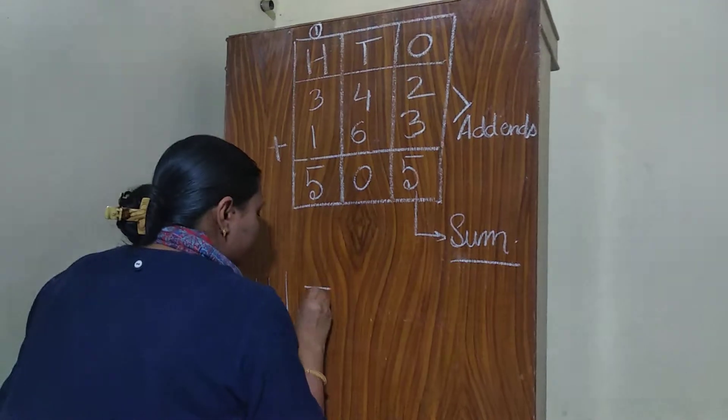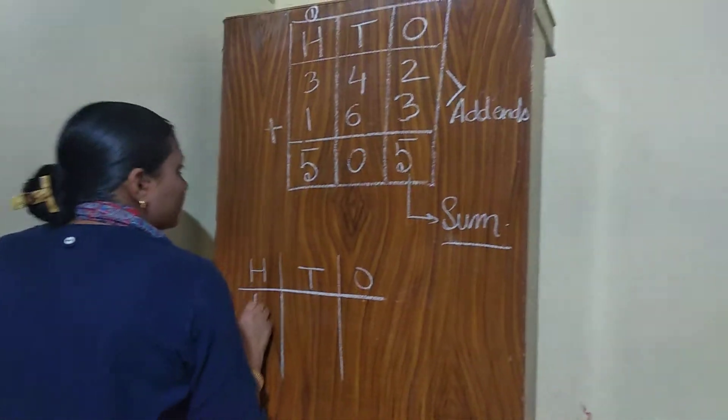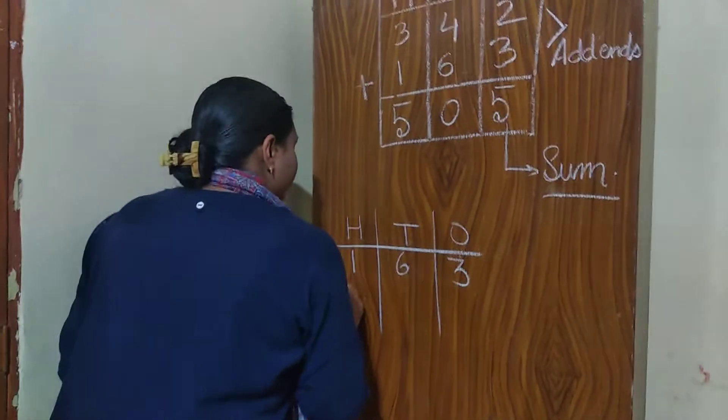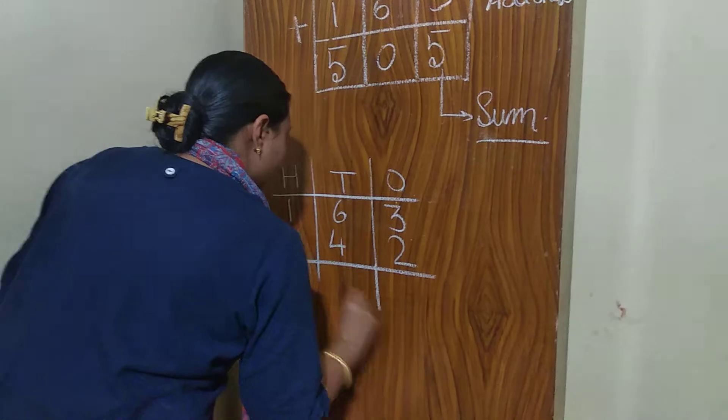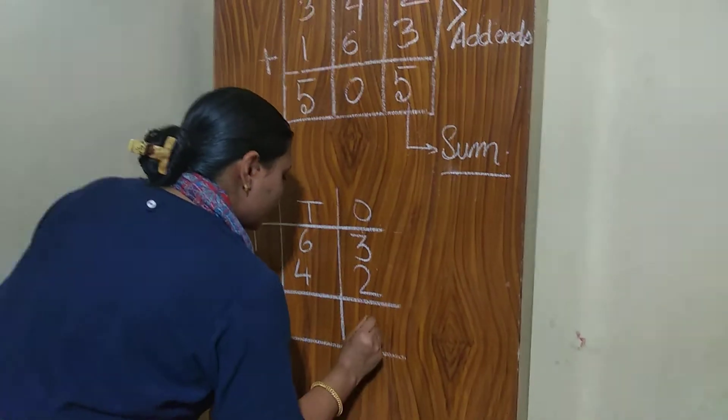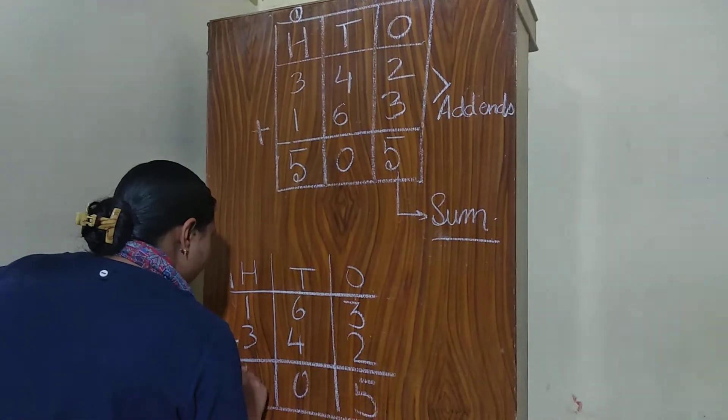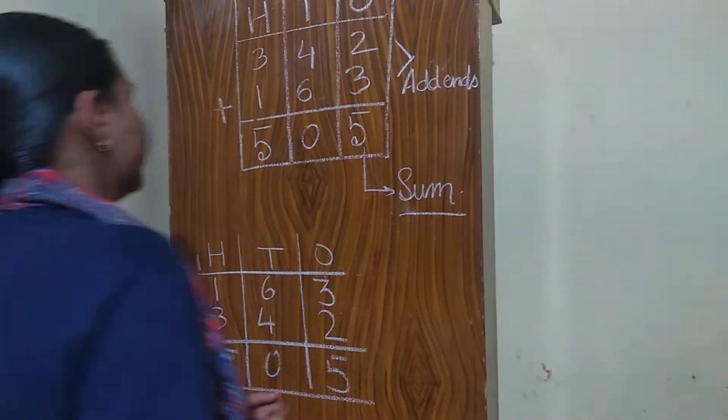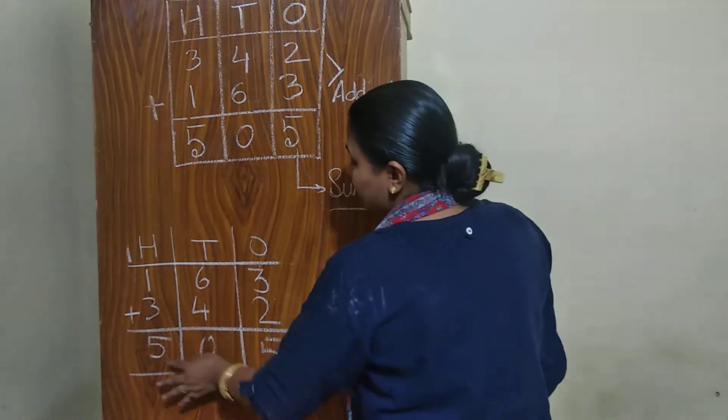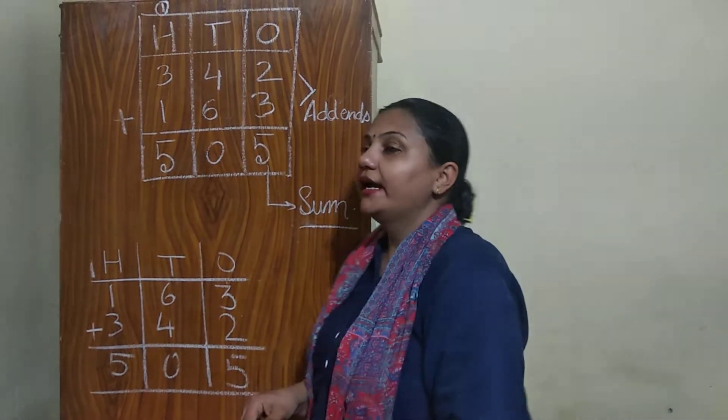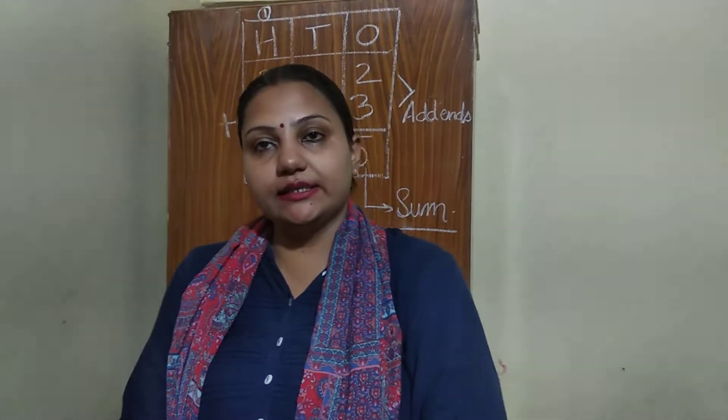see children, here also when I change the order of the addends, then also the answer is 505, it means that, if I will change the order of the addends, then also answer will be same.